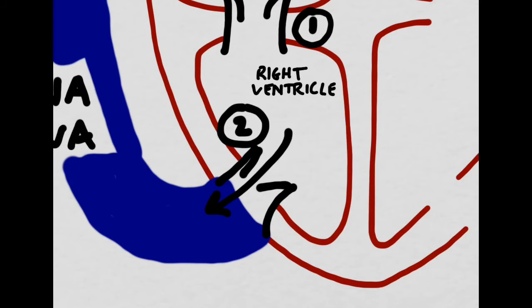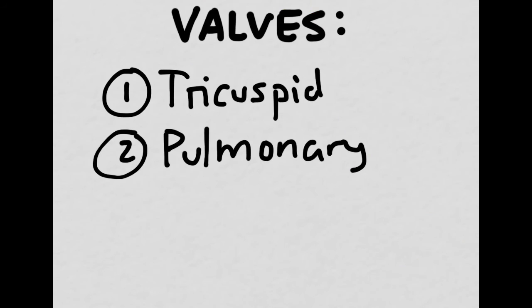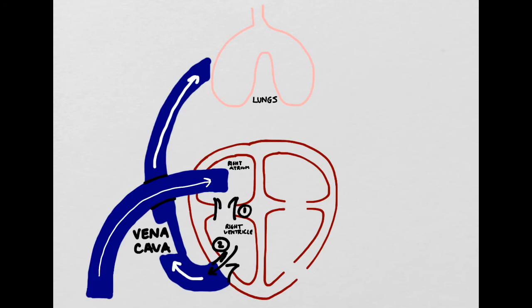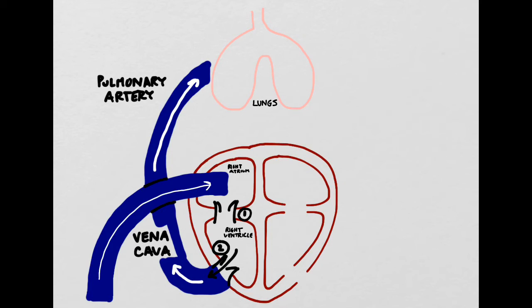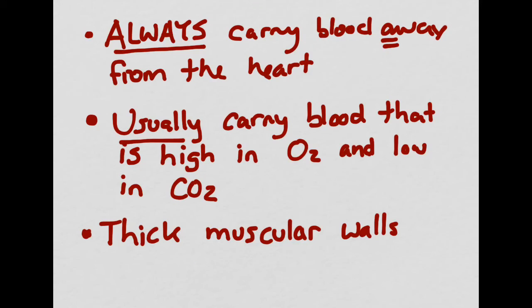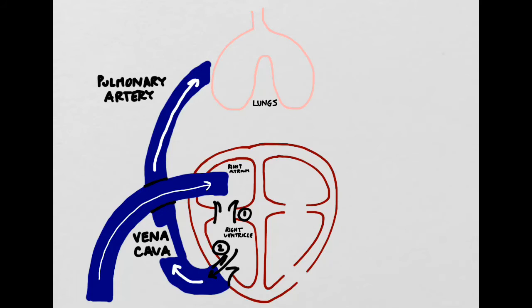The deoxygenated blood will then flow out of valve number two. Valve number two is called the pulmonary valve. The blood then flows into a new blood vessel which is called the pulmonary artery. Now this tends to be where people get confused because they look at this blood vessel and they're confused about why it's an artery but is carrying deoxygenated blood. Don't forget that arteries always carry blood away from the heart and they usually carry oxygenated blood, but the pulmonary artery is the exception. Because the pulmonary artery flows away from the heart, it's still an artery even though the blood it's carrying is deoxygenated.